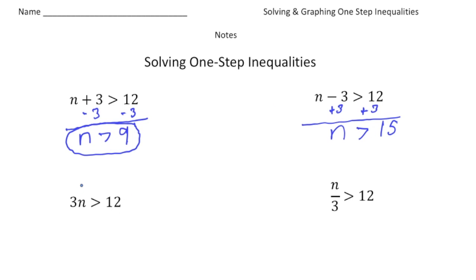Down here we have 3 times n is greater than 12. The opposite of multiplying by 3 is dividing by 3. When I divide this side by 3, the 3 cancels out and n is left. When I divide 12 by 3, I get n is greater than 4.